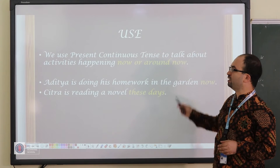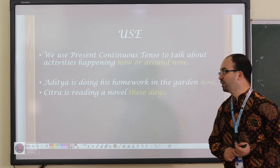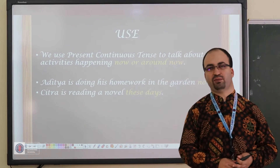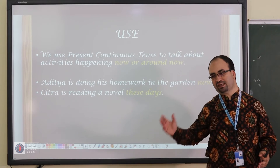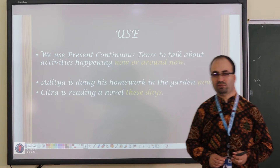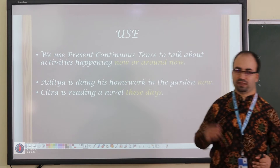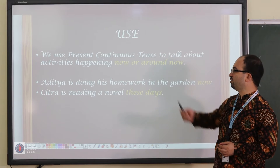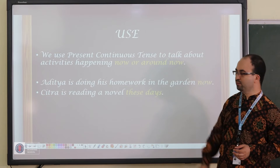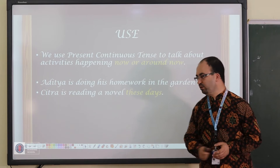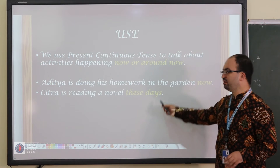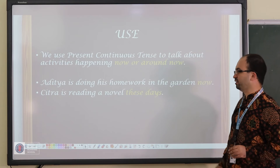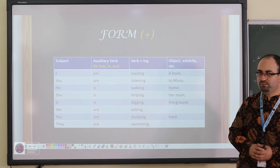Let's look at the use of present continuous. The most common use is for activities happening now or around now. What do I mean by 'around now'? Maybe right now it is not happening, but it started before and will continue later. For example, 'I am reading a novel these days' — right now I am not reading, but I already started and haven't finished yet. Aditya is doing his homework in the garden now — that's right now. Chitra is reading a novel these days — she started but hasn't finished yet.